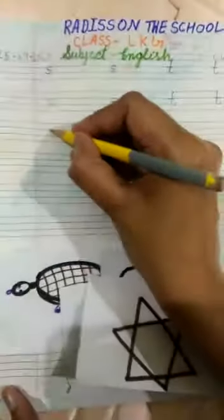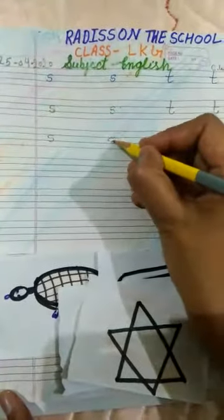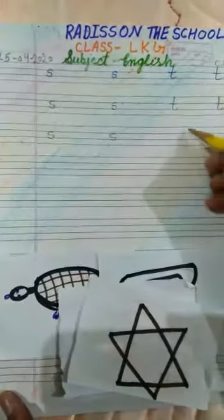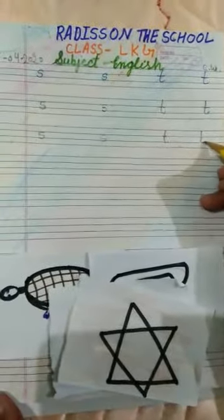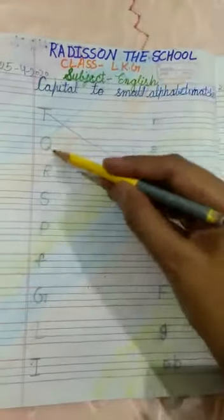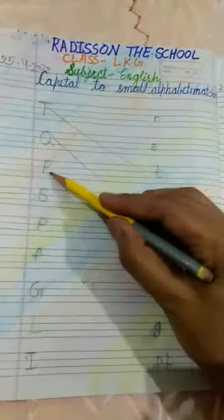So we will complete this whole page. Then what is this? Small Q — we will complete the small Q page as well. This is small Q.